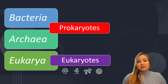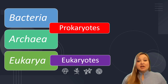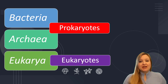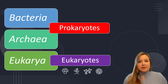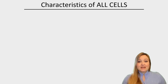Within the eukaryote domain, we have kingdoms that include fungi, plants, animals, and protists. So those are our eukaryotes. And today we're going to talk about the difference between the cells of prokaryotes and the cells of eukaryotes.